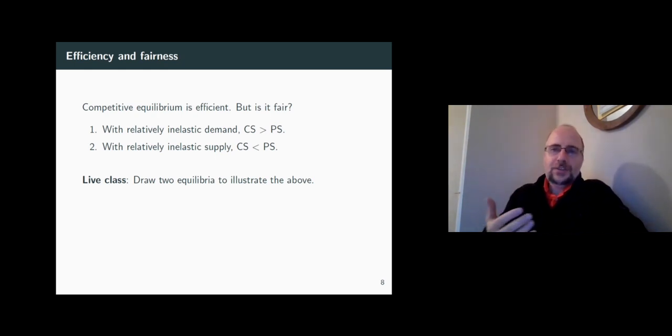then the consumer surplus is much smaller than the producer surplus. So in this case, consumers gain very little from trade, whereas firms gain a lot. Respectively, firms have a lot more to lose from any distortion to equilibrium.